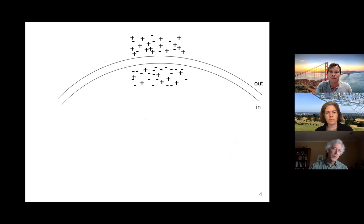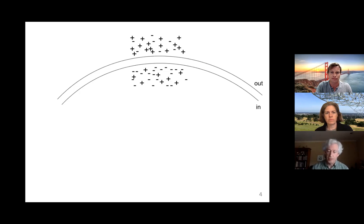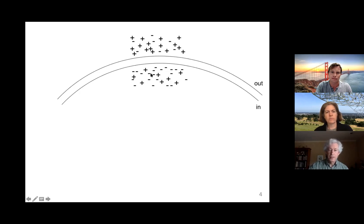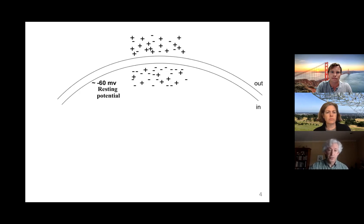I'm going to begin with an intuitive overview of how signals are generated and transmitted in the nervous system, then come back to a more quantitative treatment of those mechanisms. So this is the membrane of a cell here. Inside and outside of the cell is a solution with conductive ions in it. In this case, there are a few more negatively charged ions inside the cell than outside, which means the inside has a negative charge — about negative 60 millivolts or so. We call this the resting potential.